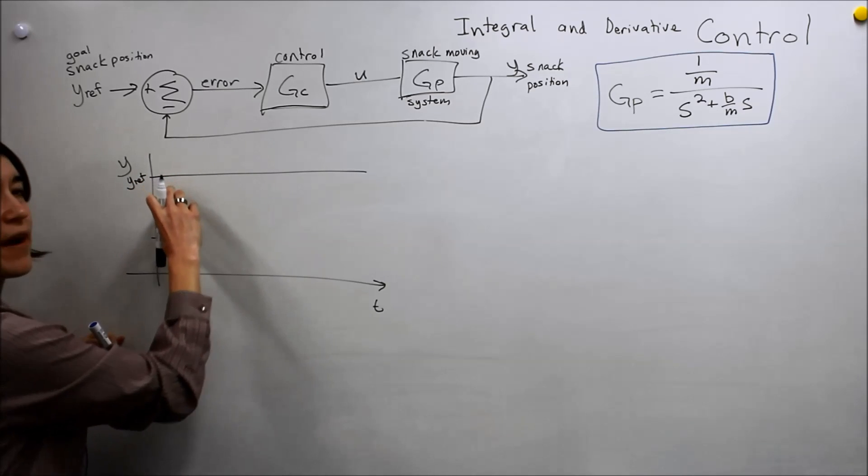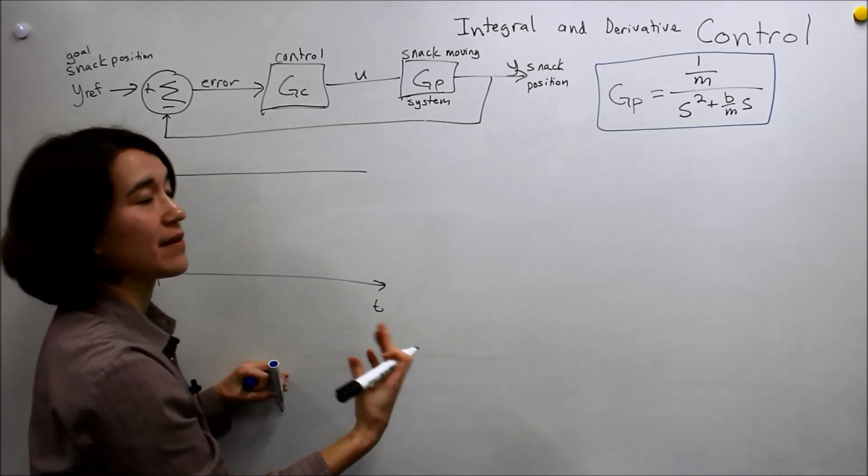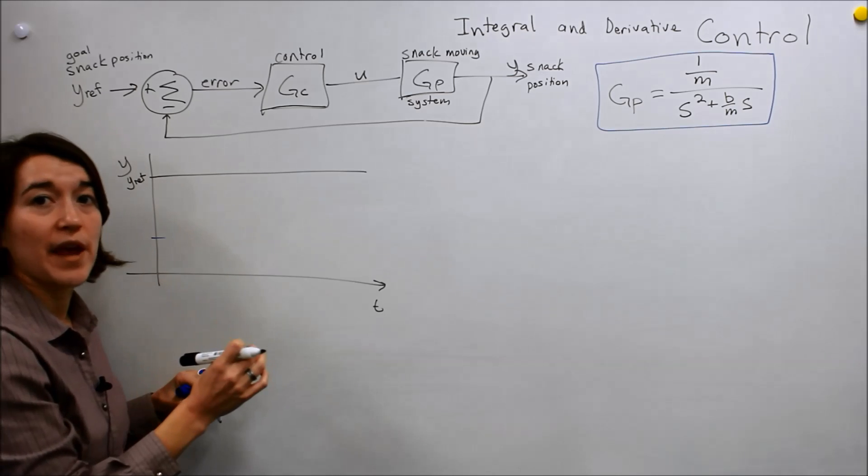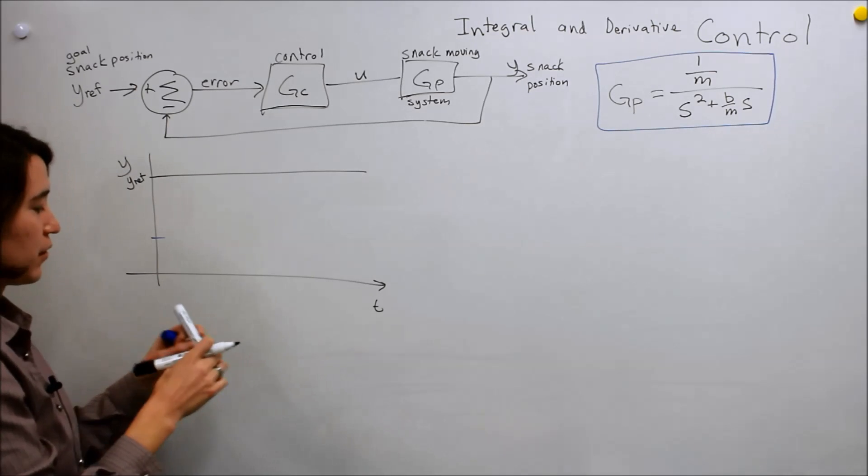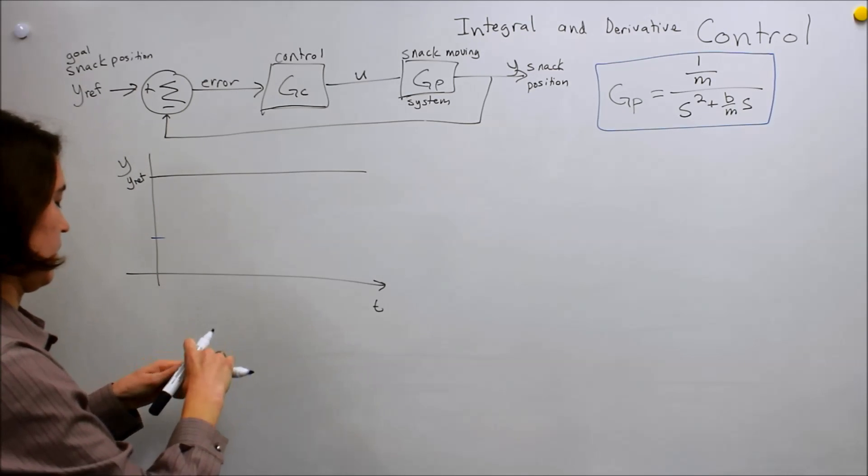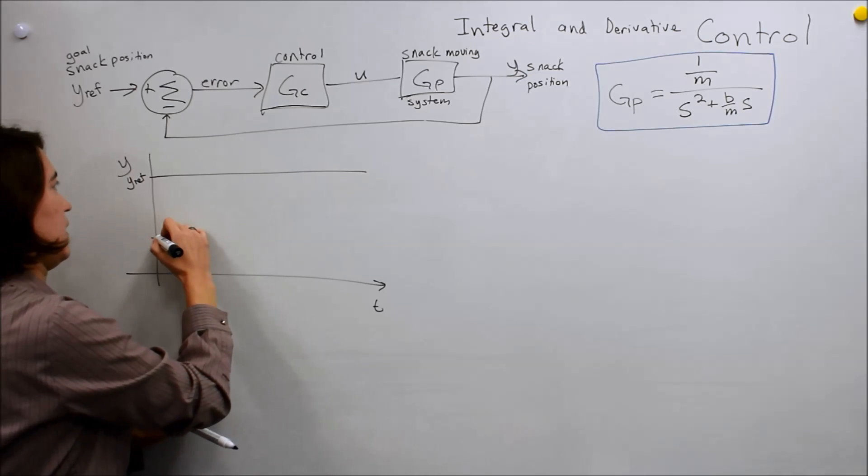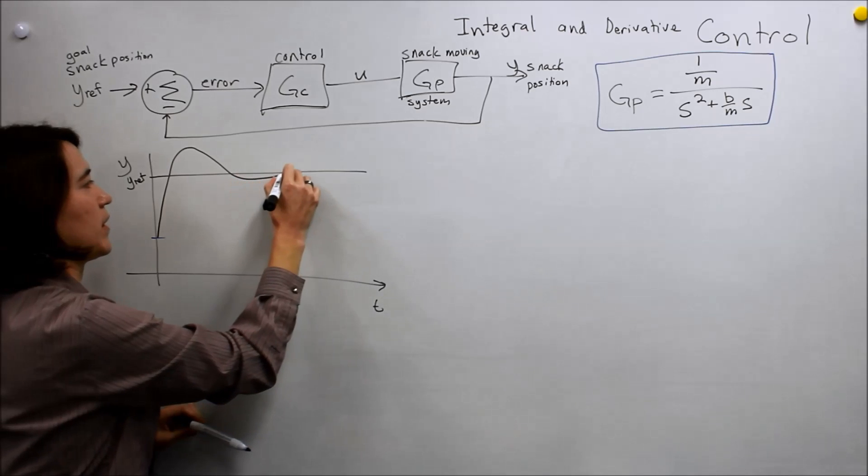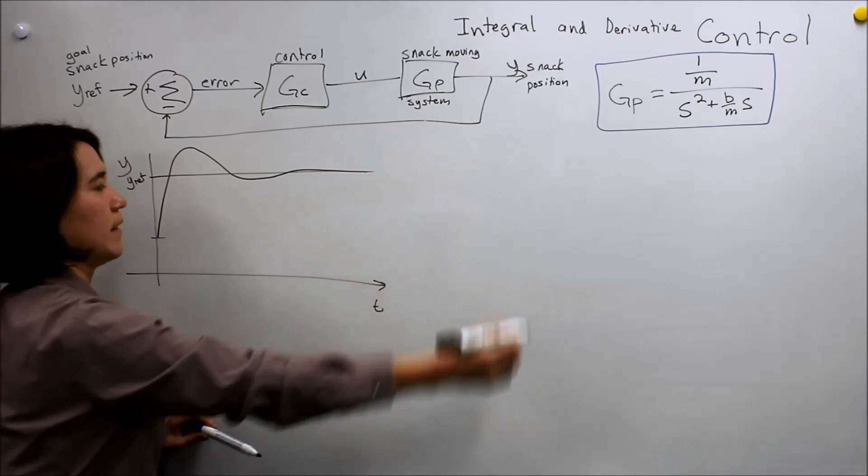Then before we looked at the error, and we created an input based on a proportion, just some constant times the error. With integral control, the basic idea is that you have a system that kind of oscillates, maybe a little bit here, then goes to the point.